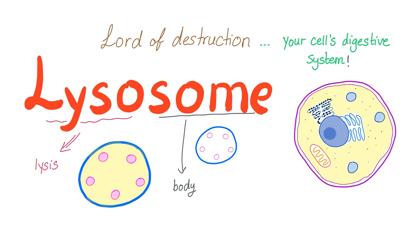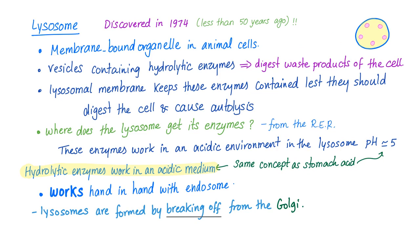Now let's turn our attention to the lysosome — the lord of destruction, your cell's digestive system. 'Lyso' means lysis and 'some' means body. The lysosome is a membrane-bound organelle that has vesicles containing hydrolytic enzymes that digest waste products of the cell. The lysosomal membrane keeps the enzymes contained, because if they escape outside of the lysosome, they will digest the mitochondria, Golgi apparatus, nucleus, etc. That's why the lysosomal membrane is very vital.